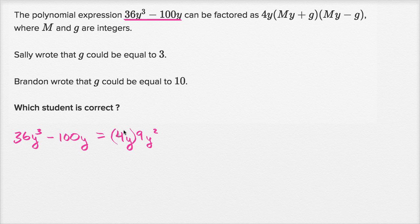And then for this second term, if we're going to subtract, if we factor out a 4y again, what's left over? 100 divided by 4 is 25, and then y divided by y is just 1. So we're just left with a 25 here.